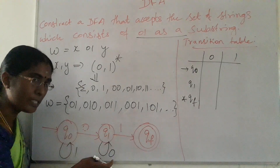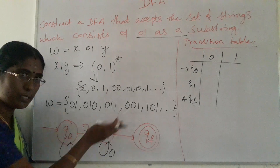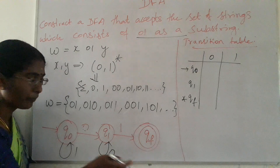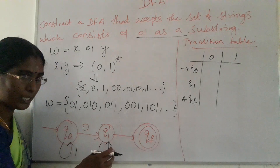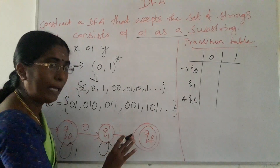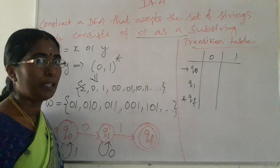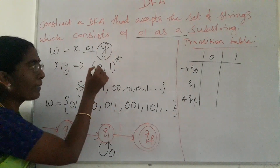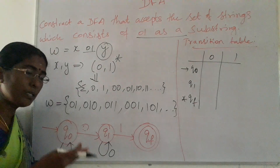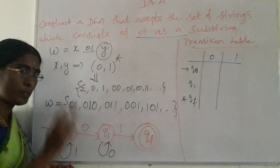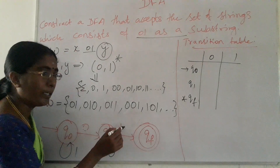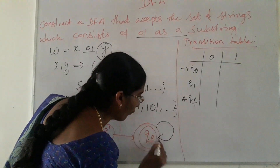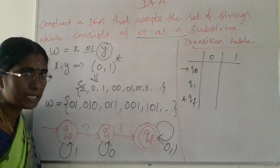After '0', if we see another '0', we should not forward to the final state — so for '00' we make a self-transition at Q1 for input '0'. If the second symbol is '1' after '0', it leads to the final state, so we make a forward transition to QF. Once we have seen '01' in the string, the Y part can be replaced by any sequence from (0,1)*, so after '01' the DFA accepts any further symbols while remaining in the final state.